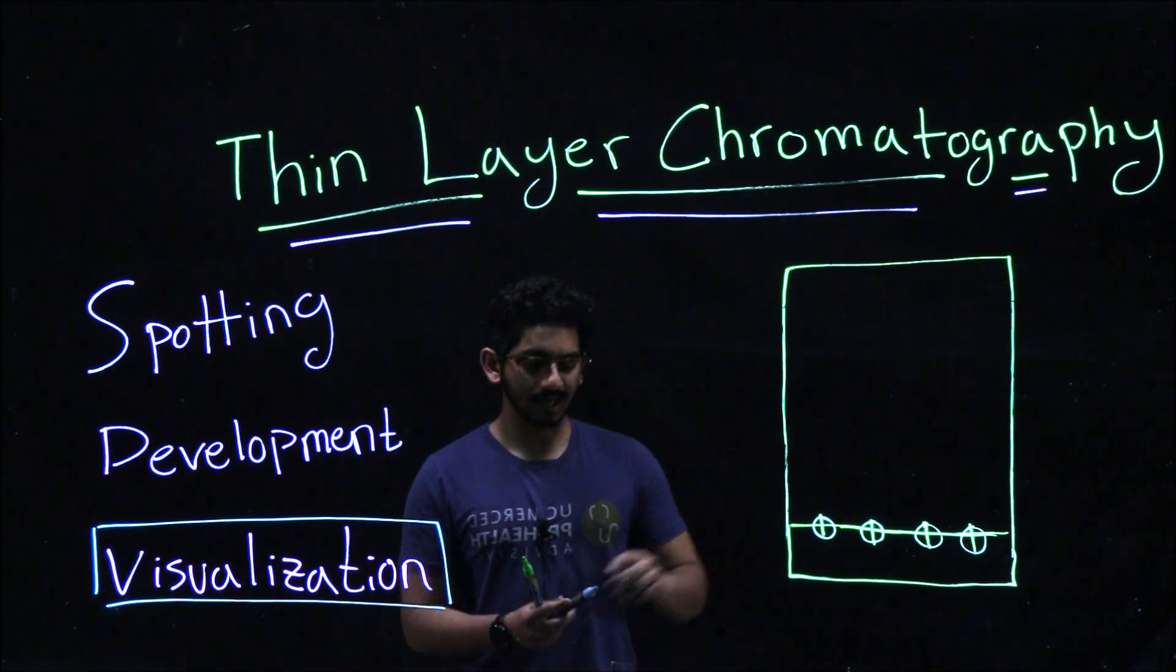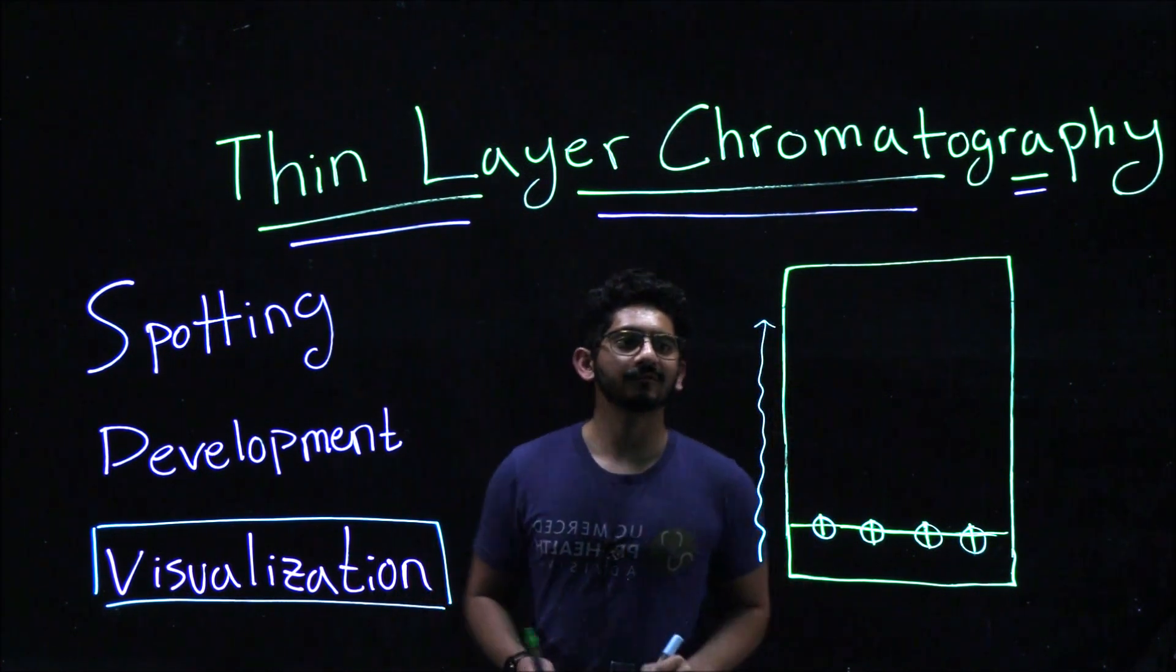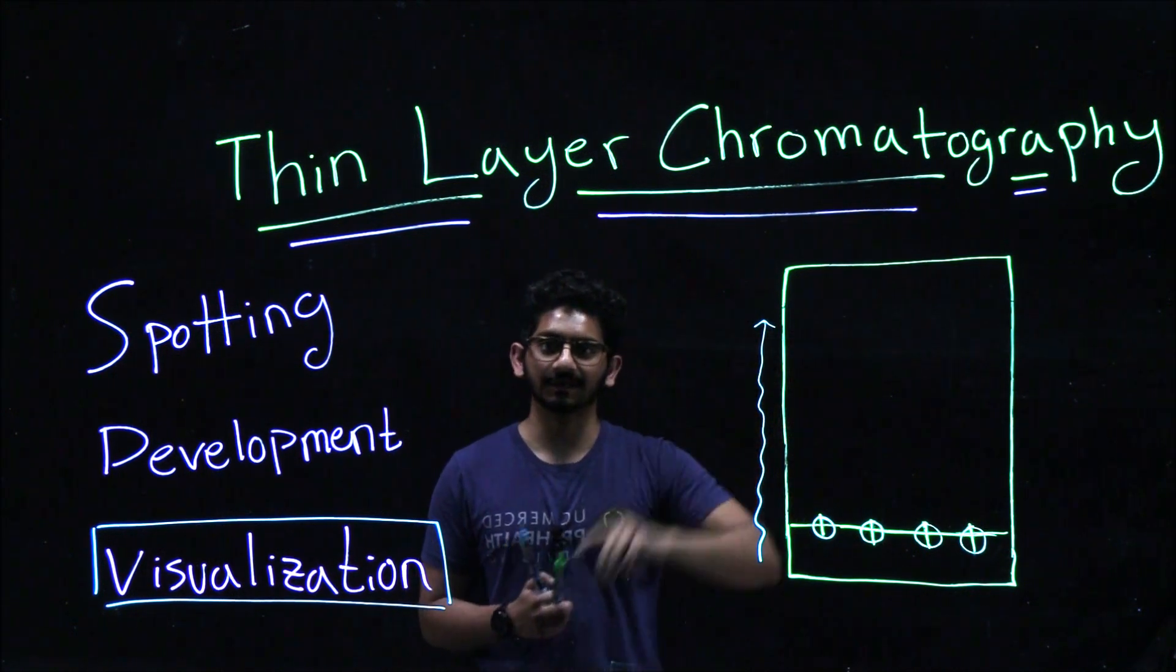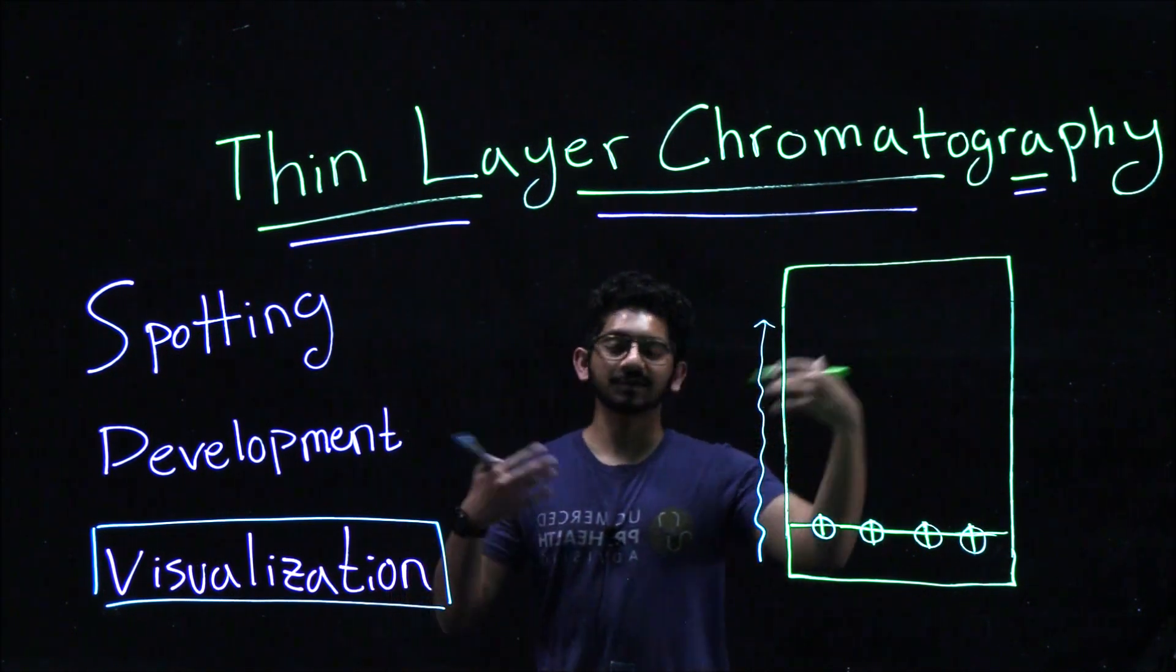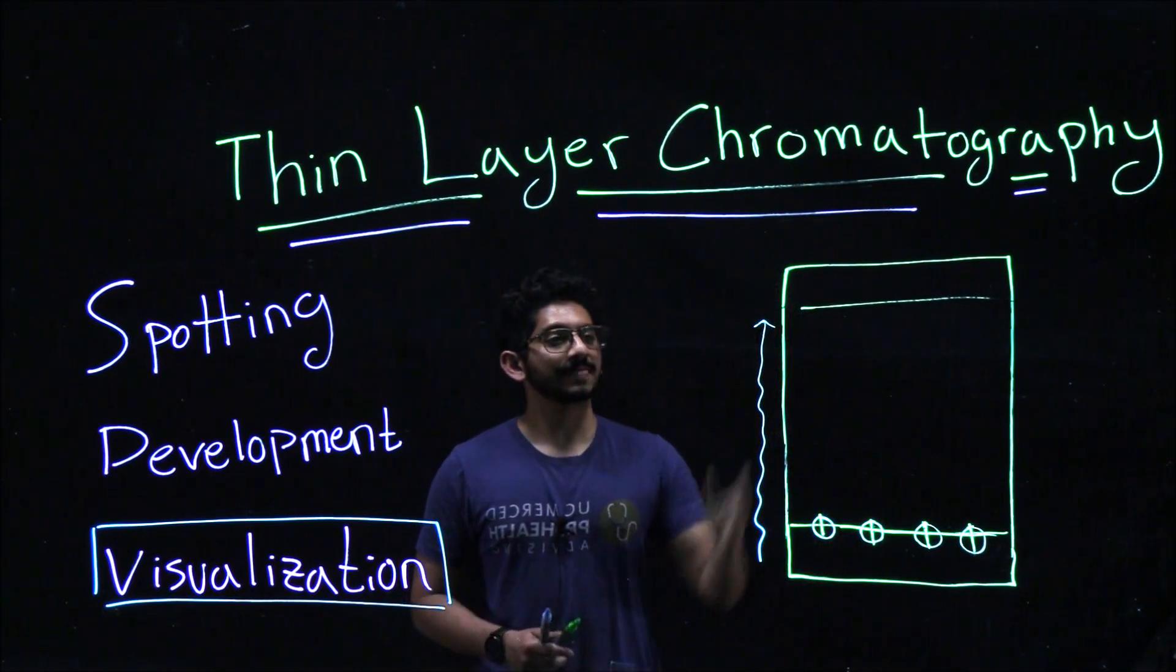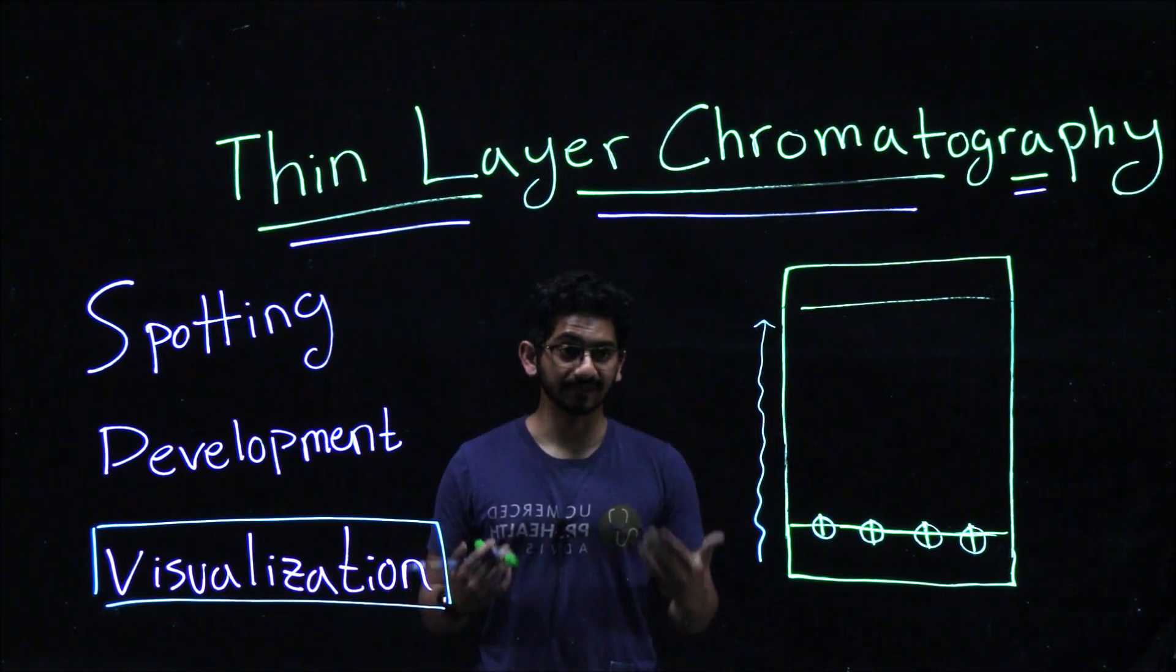Lastly, we have visualization. As your TLC plate is being developed, your mobile phase will move up the TLC plate, and when you see the solvent one centimeter from the top, make sure to take your TLC plate out and trace a light line with your pencil, and that line is going to be considered your solvent front, where the solvent ends.